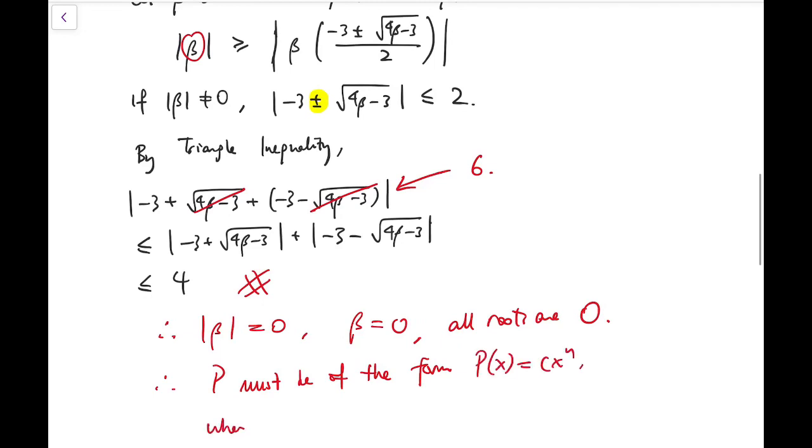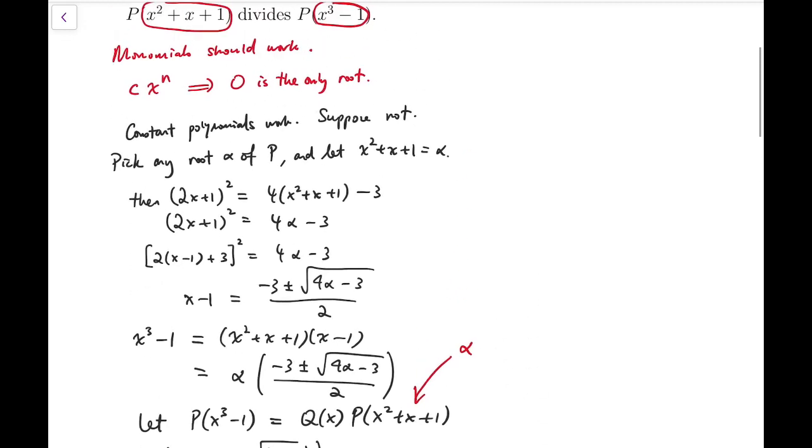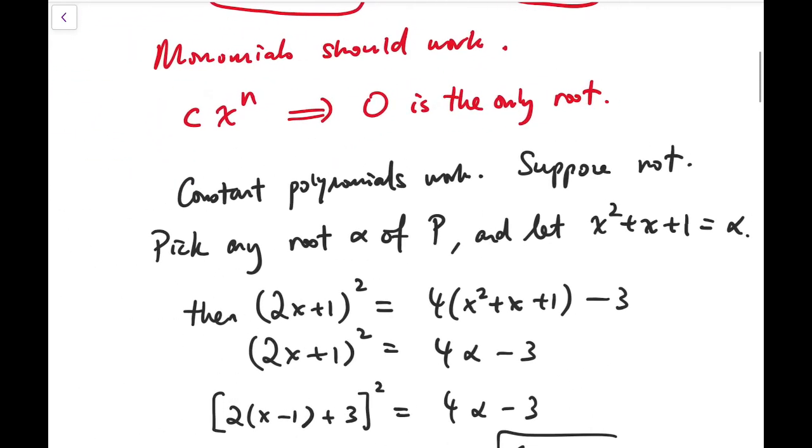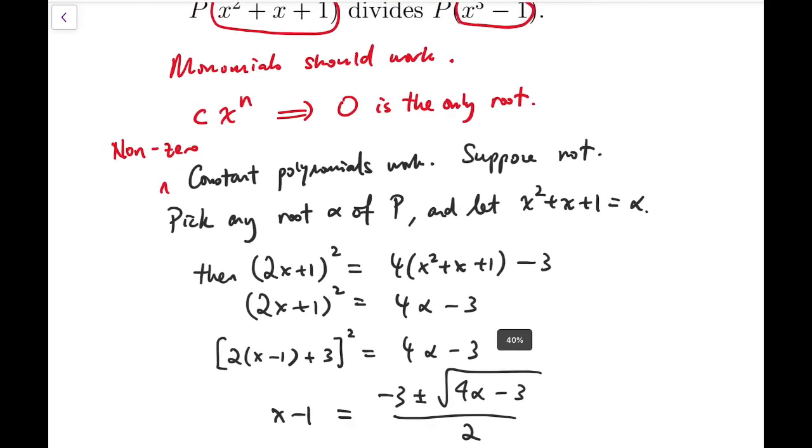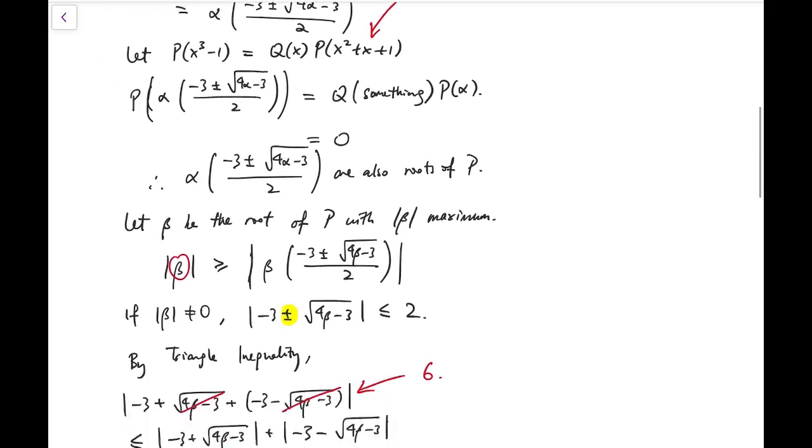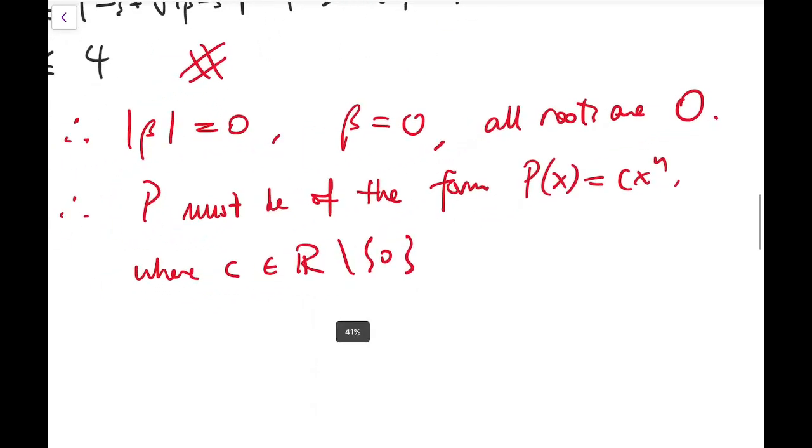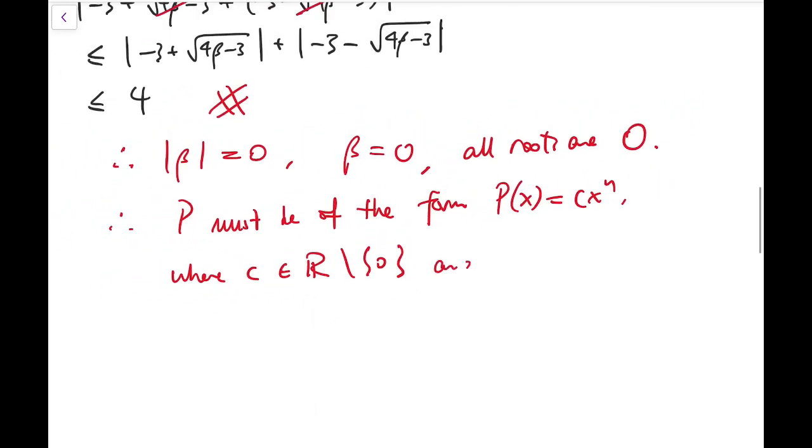Where c is a constant, okay, non-zero. I should actually add something at the top, is that it's not just constant polynomials, it's non-zero constant polynomials work. And this n should be natural numbers, sorry, integers, which are not negative.